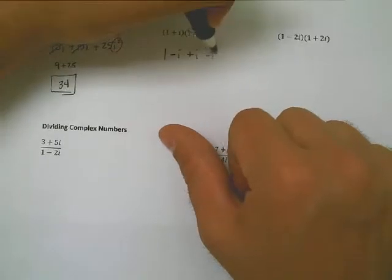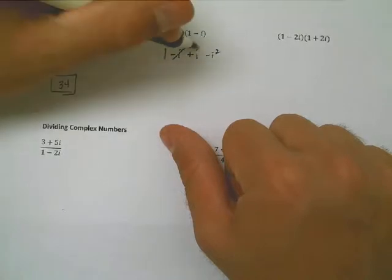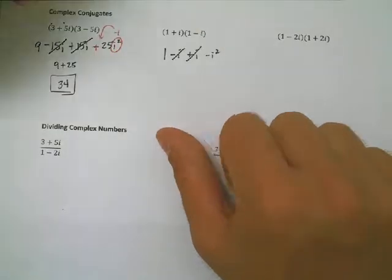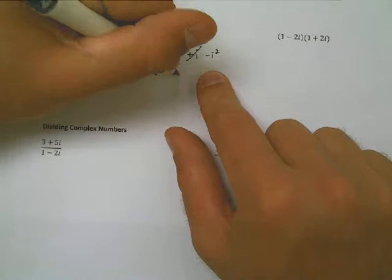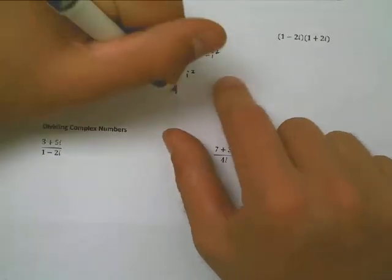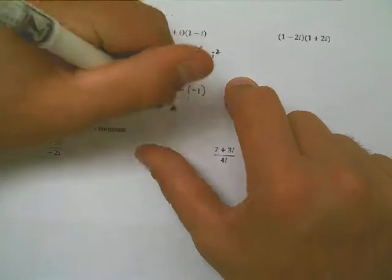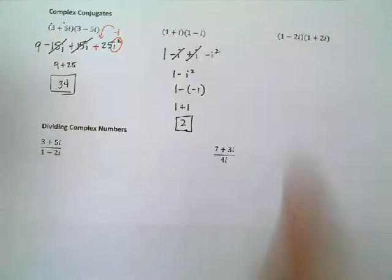Notice that the middle two numbers, the negative i and the positive i, go away. And this is really 1 minus i squared, right? But i squared is negative 1. So it's really 1 minus negative 1. It's really 1 plus 1. The i's went away. 1 minus i, 1 plus i FOILs out to give you just a real number, 2.